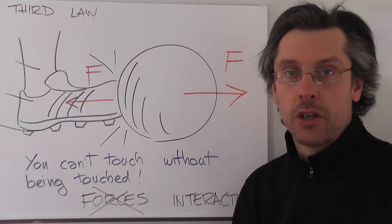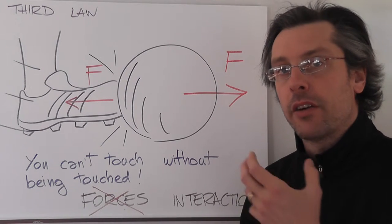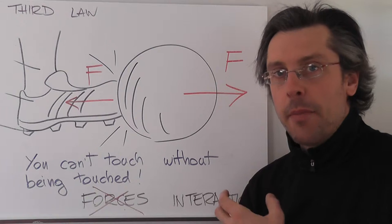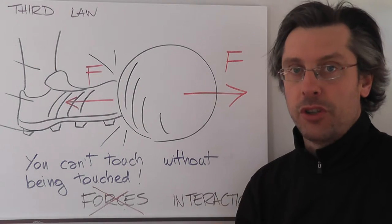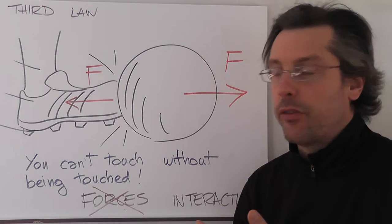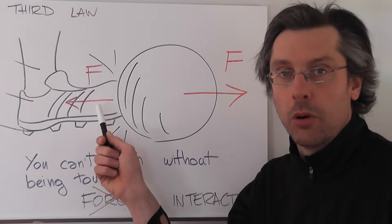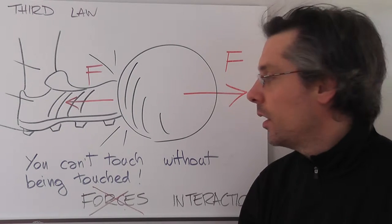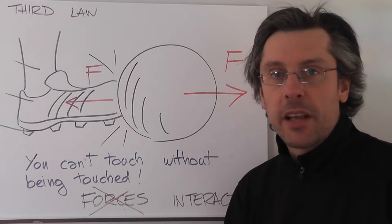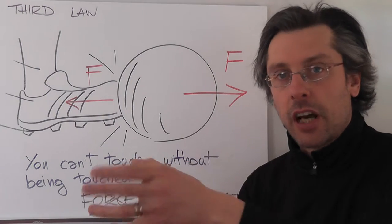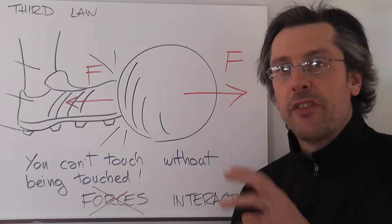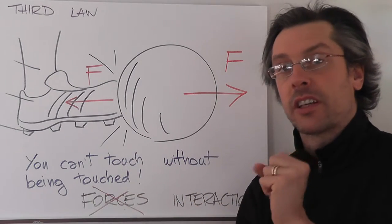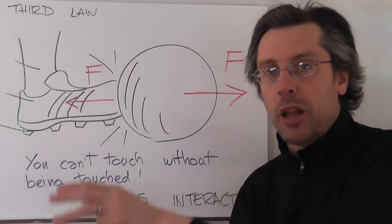that every time you push or pull something, every time you apply a force on an object, the same object will apply a force on you. And not any force, a force which is equal in magnitude but in the opposite direction. Very simply, you can say that you cannot touch without being touched in turn. And this applies to any kind of force that an object can apply on another object.